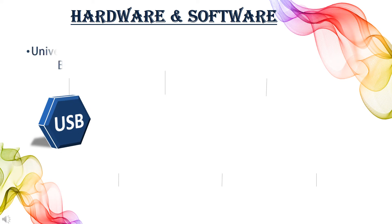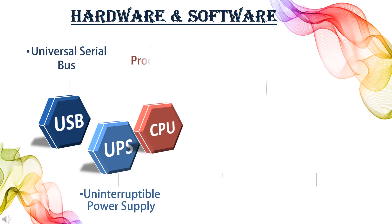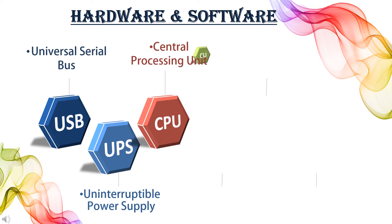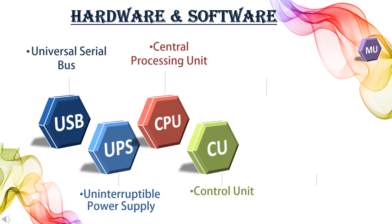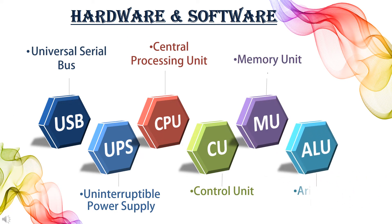USB: Universal Serial Bus. UPS: Uninterruptible Power Supply. CPU: Central Processing Unit. CU: Control Unit. MU: Memory Unit. ALU: Arithmetic and Logical Unit.